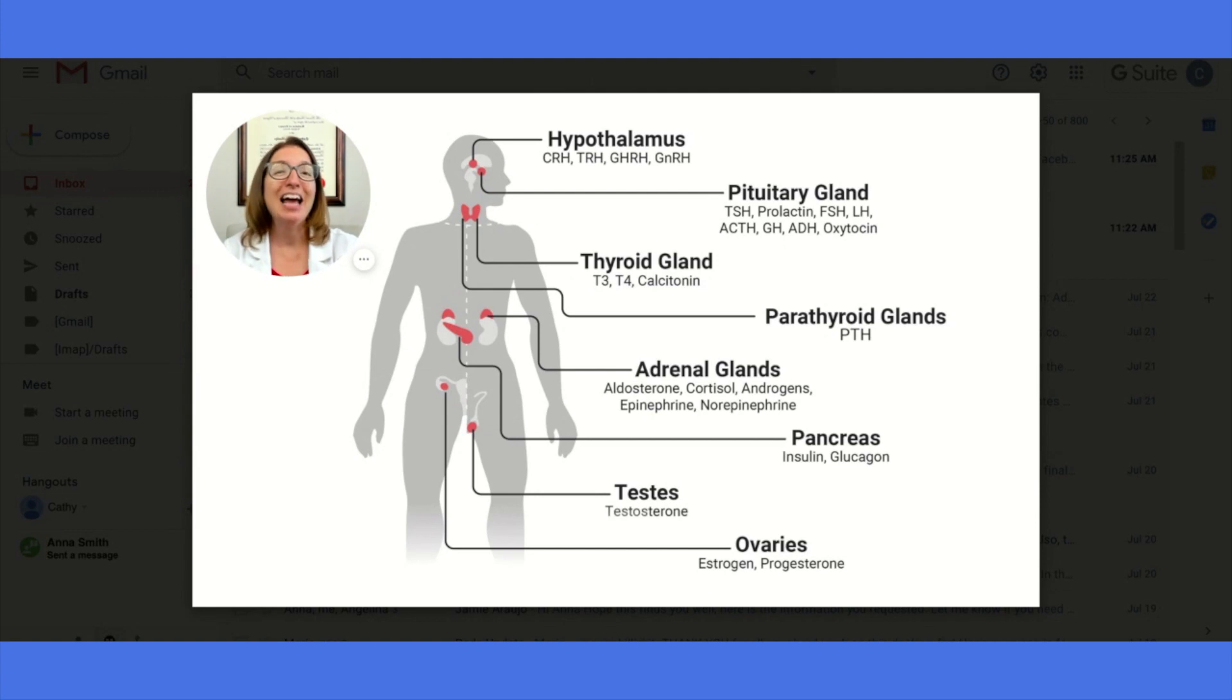Then moving on to the pituitary gland, the pituitary gland is also located in the brain. Some hormones are released from the anterior pituitary gland and some hormones are released from the posterior pituitary gland. So the hormones released from the anterior pituitary gland include thyroid-stimulating hormone, prolactin, follicle-stimulating hormone, luteinizing hormone, adrenocorticotropic hormone, and growth hormone.